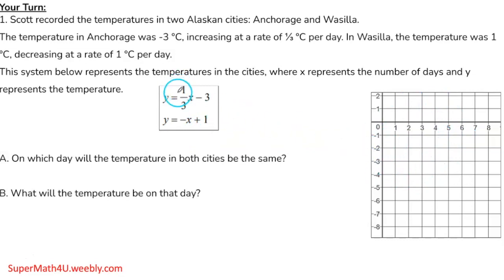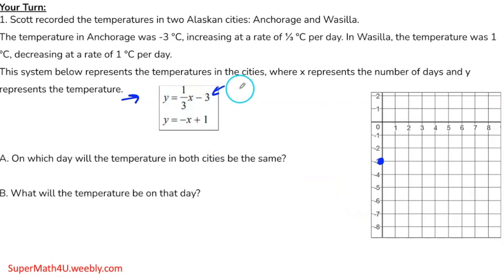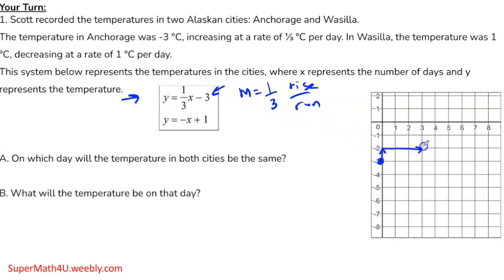Let's graph the first equation: y equals one-third x minus 3. This is in slope-intercept form. The y-intercept is negative 3 and the slope is one-third — rise over run — so I go up 1 and right 3 to get my second point. I mark those two points and draw the line.